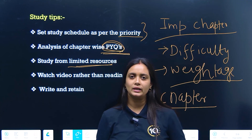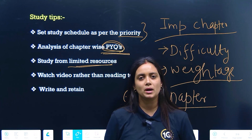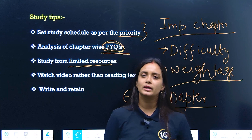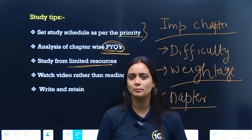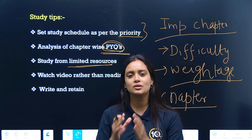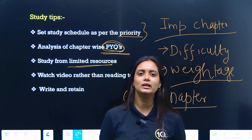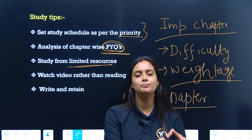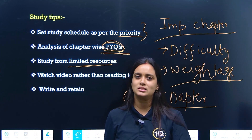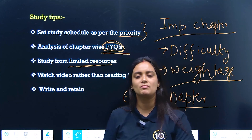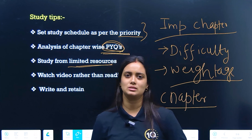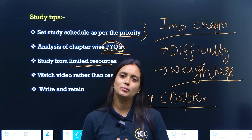You have to study from limited books — refer to specific, standard books only. For Physics, one good reference book is sufficient. For many books, we end up spreading too thin. Study specifically: for board exams, NCERT is sufficient; for JEE, refer to standard references, practice example papers, PYQs and mock tests to score well.